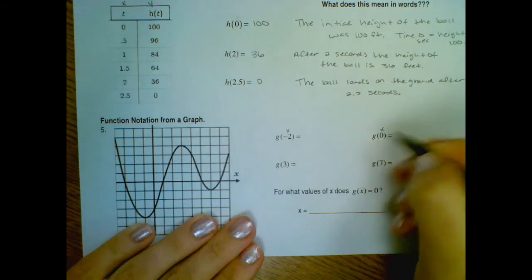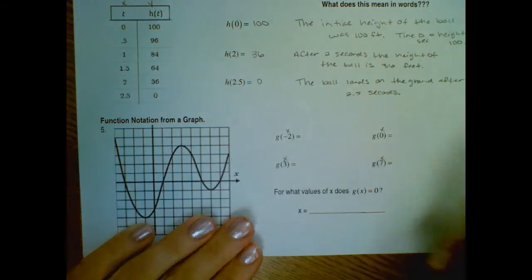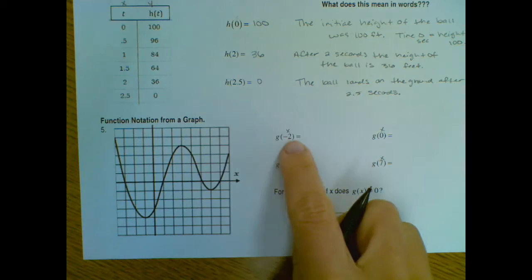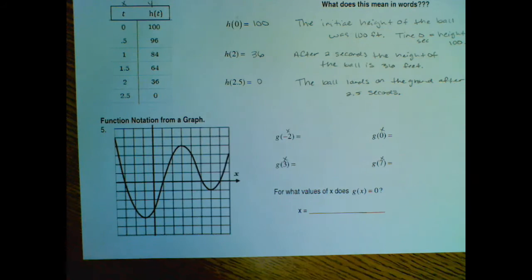So this is our x value. Every time that we look at g of something, that something is x. It'll change down here, and we'll talk about that in a second.